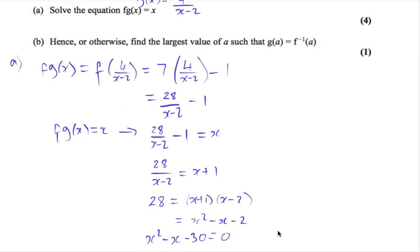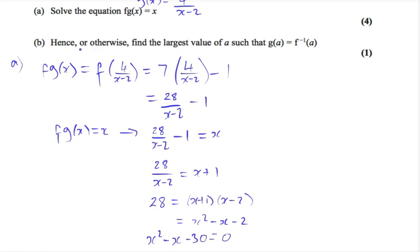Part B of the question says hence or otherwise find the largest value of a such that g of a equals f inverse of a. So whenever you see a question that says hence or otherwise, more often than not it's not going to be otherwise. It's going to be a hence question. So we need to use what we've just done in part A to answer this question.